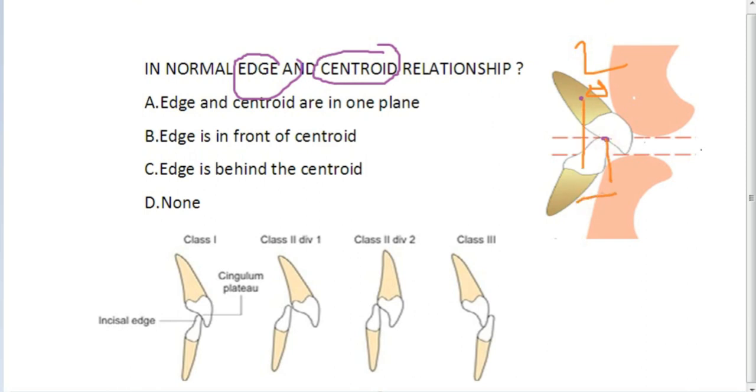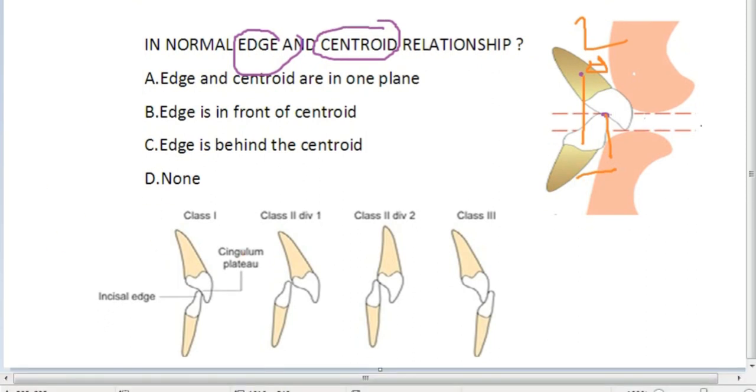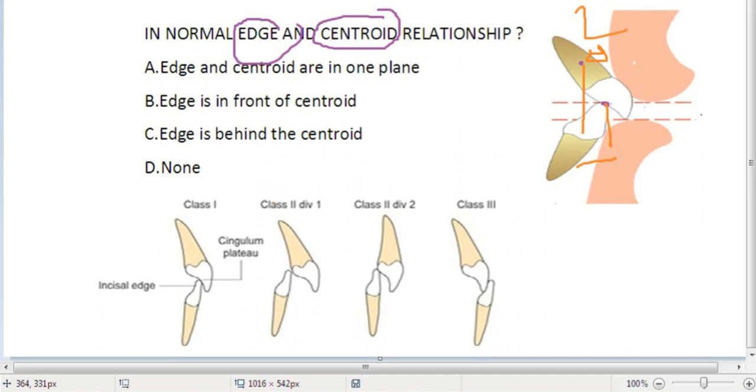If you take a Class 1, there will be a normal inter-incisal angle. Your edge is always in front of your centroid.